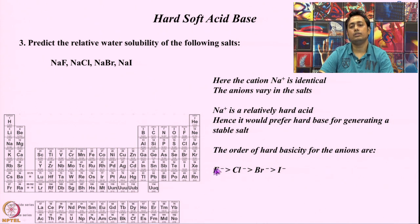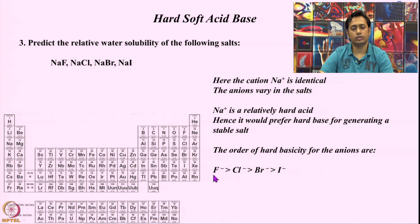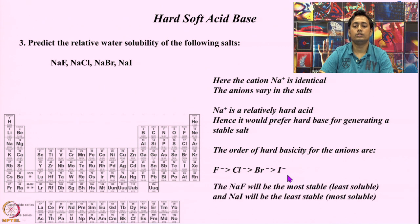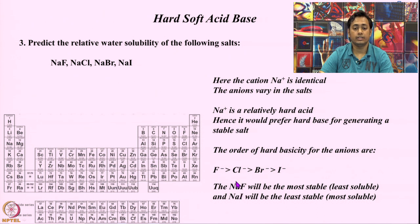Fluoride is the hardest base, so it will prefer to bond with the hard acid sodium, making sodium fluoride bond the strongest. Sodium chloride will be weaker than sodium fluoride. Sodium bromide will be weaker than sodium chloride and fluoride but stronger than sodium iodide. Sodium iodide is strongly mismatched — a hard acid with a soft base. So sodium fluoride has the strongest bond and will be the least soluble, while sodium iodide has the weakest bond and will be the most soluble.